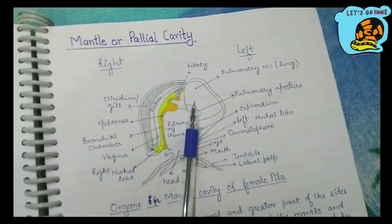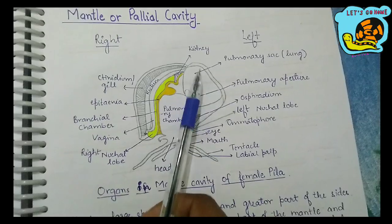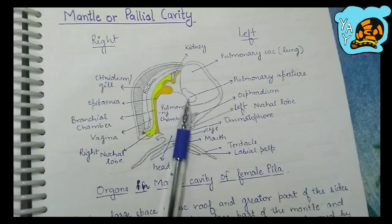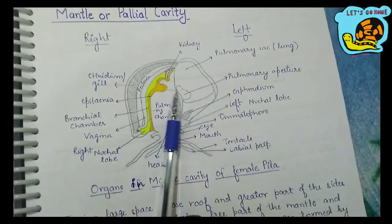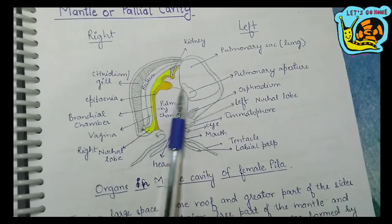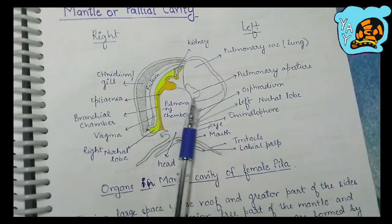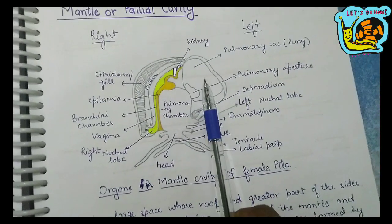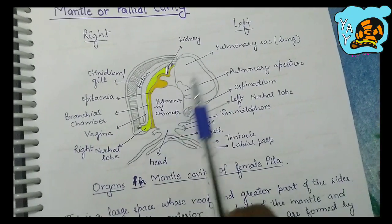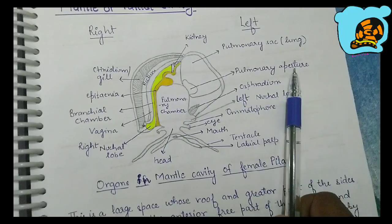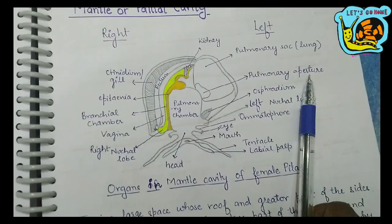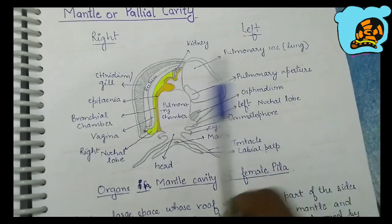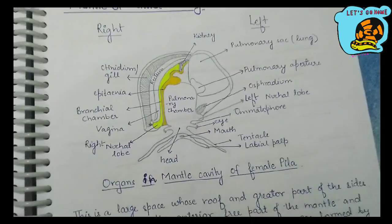The next structure is the pulmonary sac or lung. It is a large bag hanging from the roof of the pulmonary chamber, opening into a large aperture called the pulmonary aperture or pneumostome. This structure in the diagram represents the pulmonary sac — a large sac-like structure hanging from the roof of the pulmonary chamber, connected via the pulmonary aperture or pneumostome, which is present on the roof.